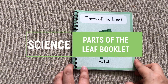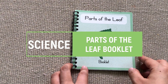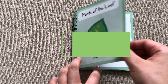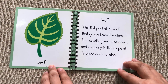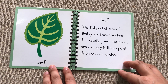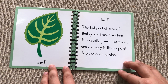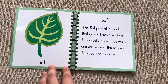Parts of the leaf. Leaf: the flat part of a plant that grows from the stem. It is usually green, has veins, and can vary in the shape of its blade and margins.